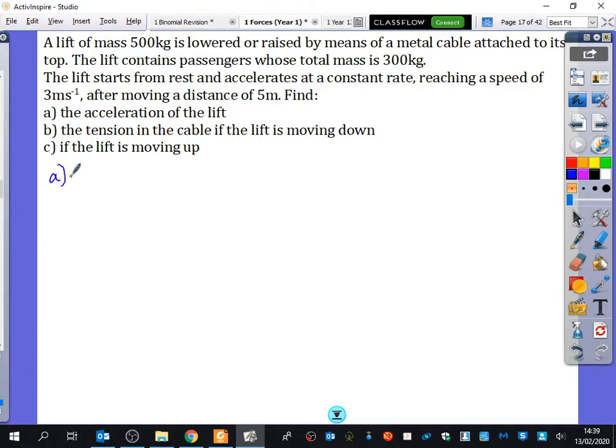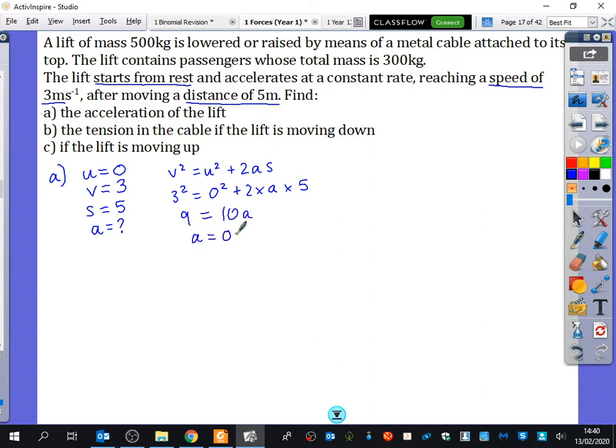So I'm actually going to start off for part A. I'm recognising that they haven't told me the acceleration, so there's no point in doing F equals MA because I don't have the acceleration. But they have told me it starts from rest, it reaches a speed of 3 metres per second after it moves a distance of 5 metres. What connects those together? V squared equals U squared plus 2AS. So we get 3 squared equals 0 squared plus 2 times A times 5. So you get 9 equals 10A, so the acceleration is 0.9.